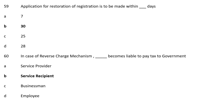Question 60: In case of reverse charge mechanism, dash becomes liable to pay tax to the government. Option A: Service provider; Option B: Service receiver; Option C: Businessman; Option D: Employee. The correct answer is Option B, service receiver. In case of reverse charge mechanism, the service receiver becomes liable to pay tax to the government.